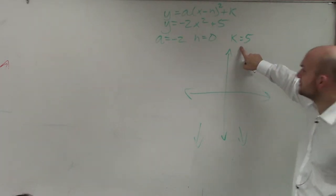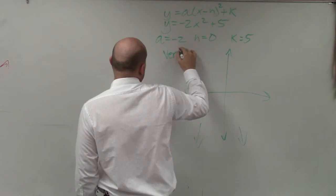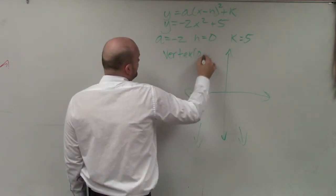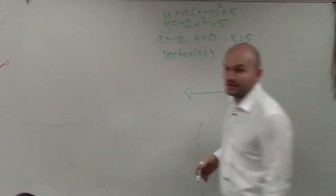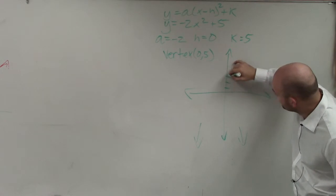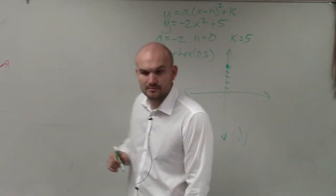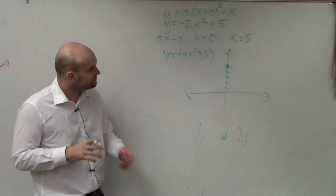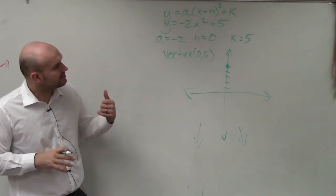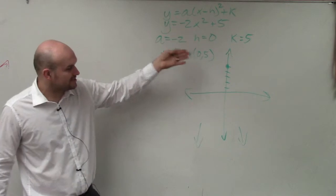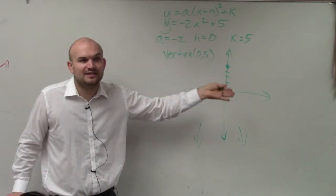I know my vertex is 0 comma 5. So I'm going to go up to 5. 1, 2, 3, 4, 5. And make a nice big dot. Now, I know my vertex. My axis of symmetry is 0. Now I need to find the other points.